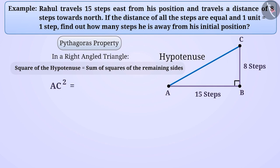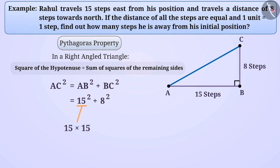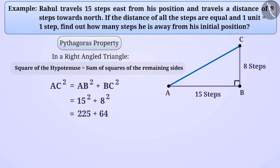AC² = AB² + BC² = 15² + 8². We get 15² = 15 × 15 = 225. Similarly, 8² = 8 × 8 = 64. Since 225 + 64 = 289, the hypotenuse AC² = 289.